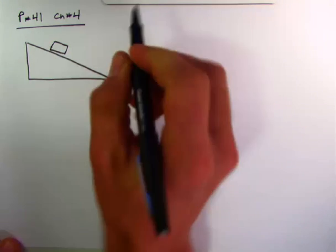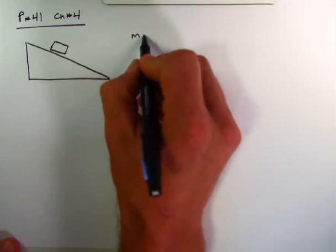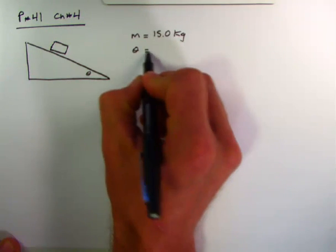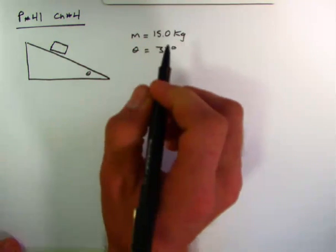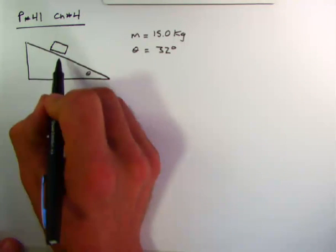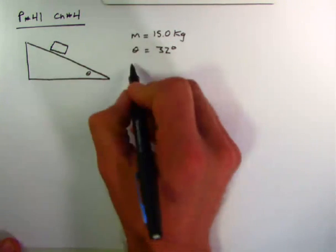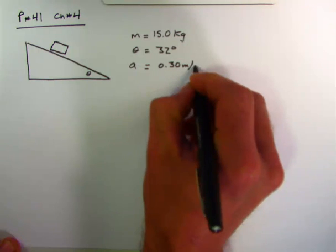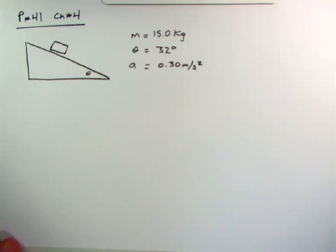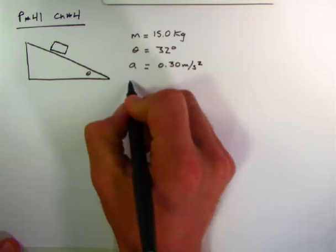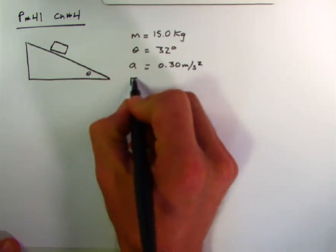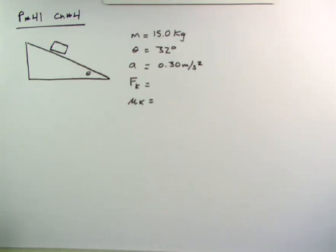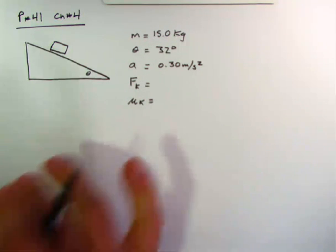So what do we know? We know that the mass of this object is 15.0 kilograms. We know that this plane is inclined 32 degrees. And it also says here that when the box is released, the box accelerates down the plane at a speed of 0.30 meters per second squared. And then the problem asks, what is the friction force? So this will be force of kinetic friction. And what is the coefficient of kinetic friction?